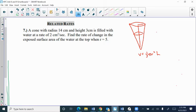So I definitely didn't draw this one to scale - the radius is 14 and the height is 3. It's being filled with water, and the fact that it's being filled with water, take a look at that measurement: cubic centimeters per second. That means my change in volume, dV/dt, is equal to a positive 2. Find the rate of change in the exposed surface area of the water at the top when r is 5.